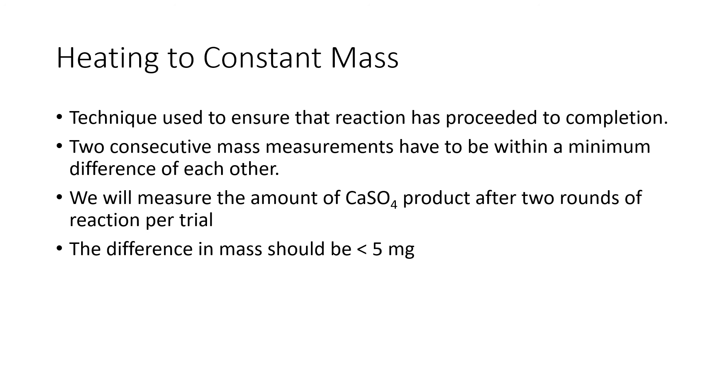The difference in mass between the two rounds of reaction has to be less than five milligrams. If the difference between two consecutive measurements is more than that, that means that you probably did not get a full reaction the first time around. You'll have to repeat one more round of reaction. Generally, because of time constraints, we will tell you that's as much as you can do. So if after the third round of reaction you are not within five milligrams, you're going to stop it there, just work with the numbers you have. Don't worry, it should all work out.